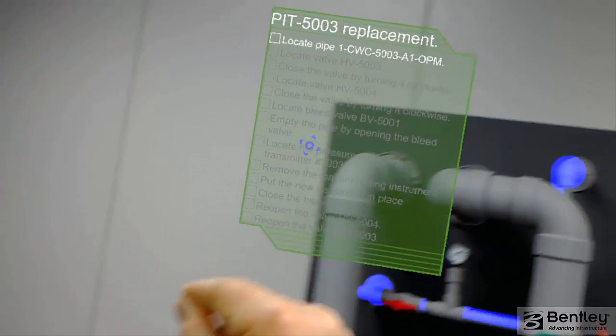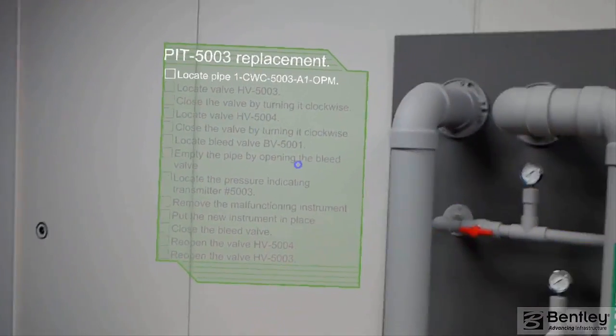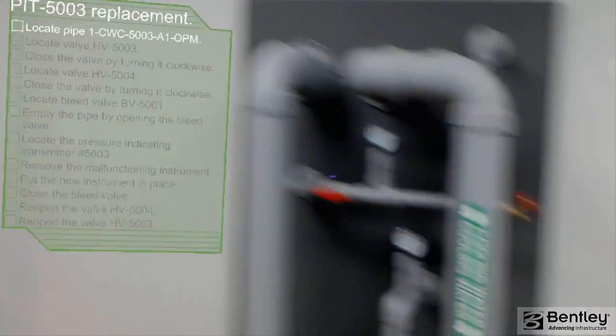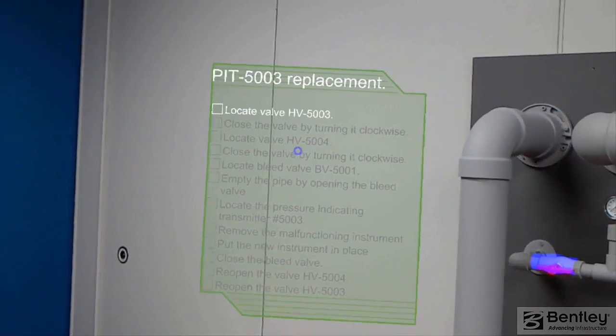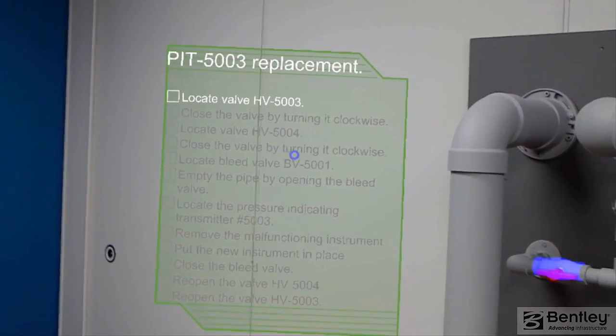First of all, locate pipe 1CWC-5003A1OPM. To move on, you have to locate valve HV-5003.